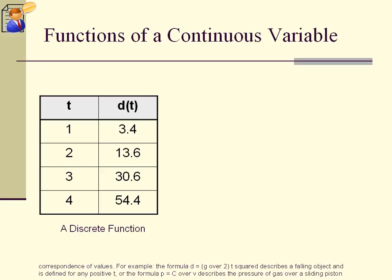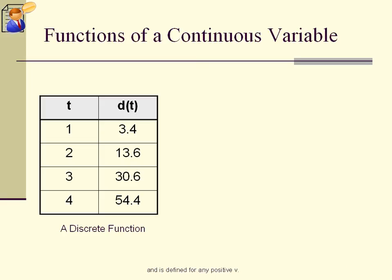For example, the formula d equals g over 2, t squared describes a falling object and is defined for any positive t, or the formula p equals c over v describes the pressure of gas over a sliding piston and is defined for any positive v.